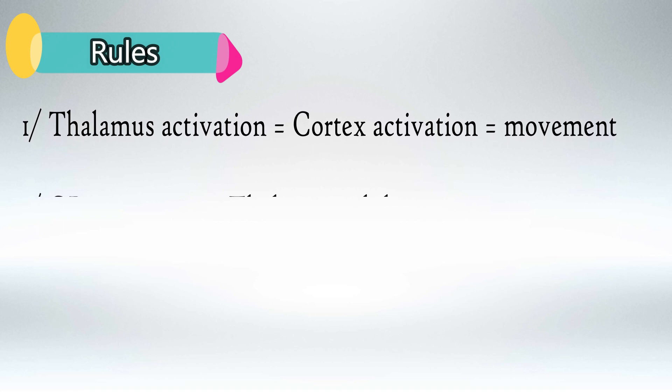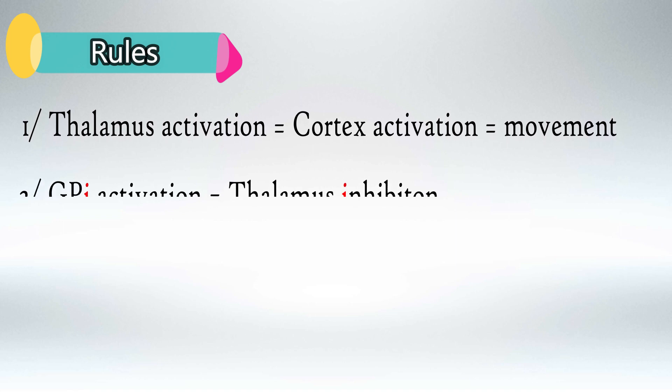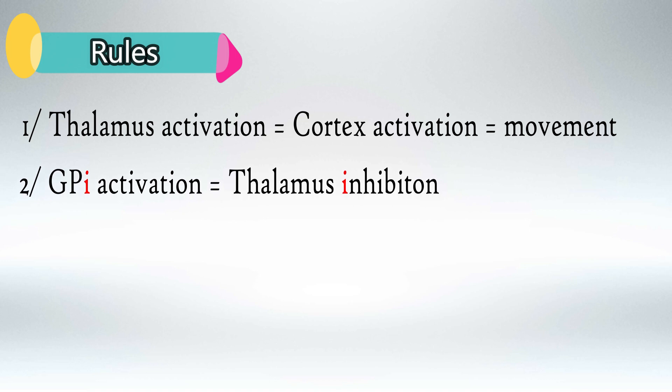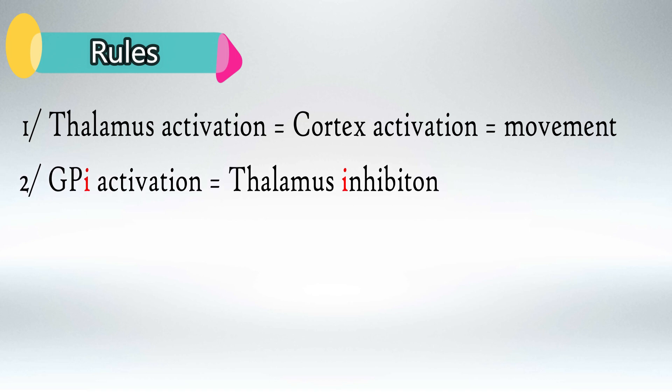Rule number 2: if the globus pallidus internus is activated, it will cause thalamus inhibition. Vice versa, if the globus pallidus internus is inhibited, it will cause thalamus activation and movement.